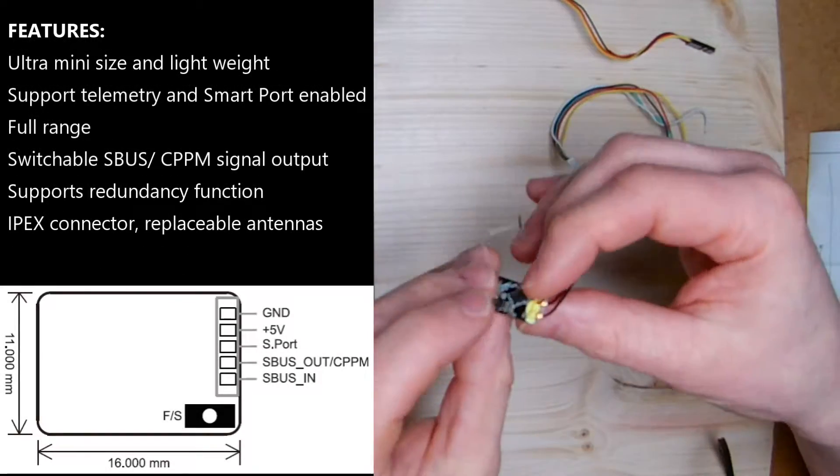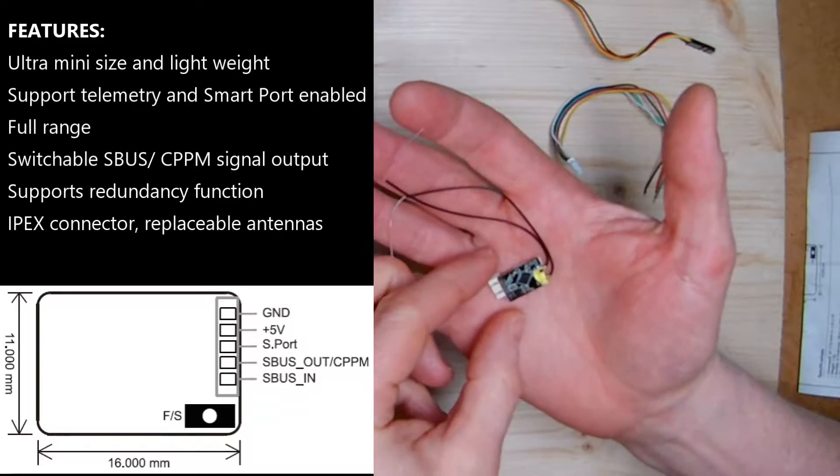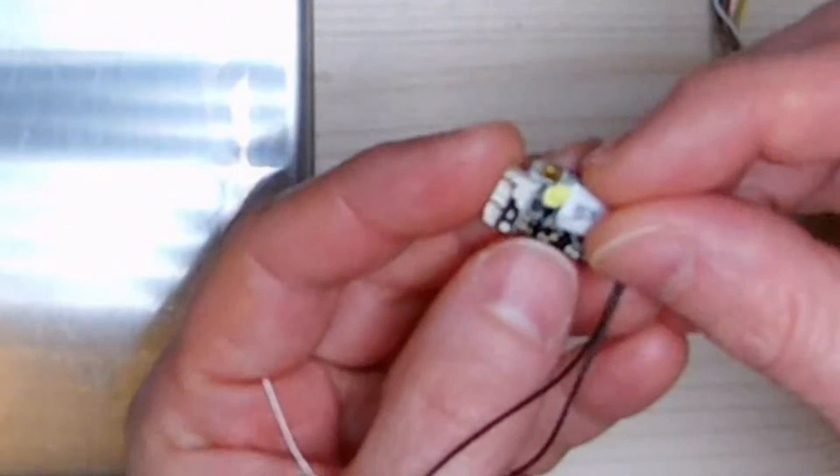The size of the RX does not reduce the performance as shown in several tests. In addition, it has soldering pads for the uninverted S-Port and S-Bus signals.